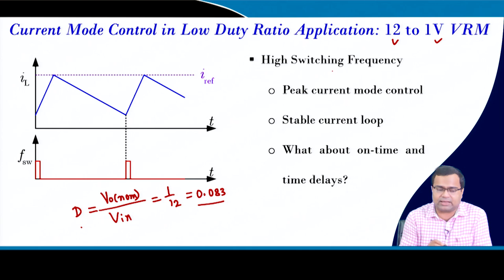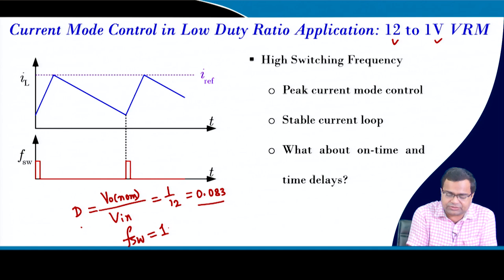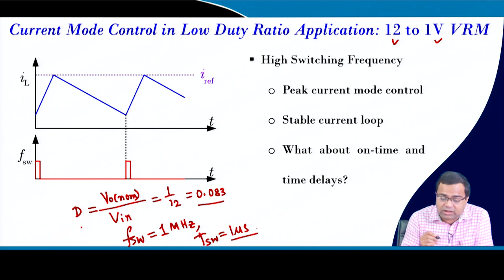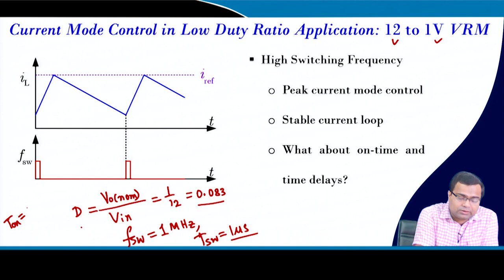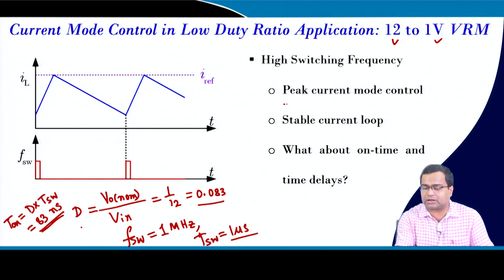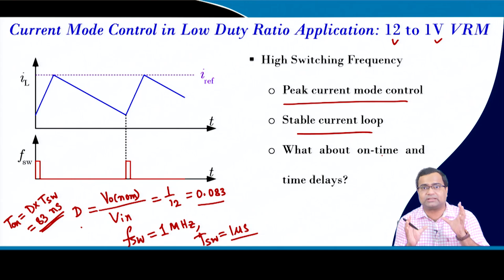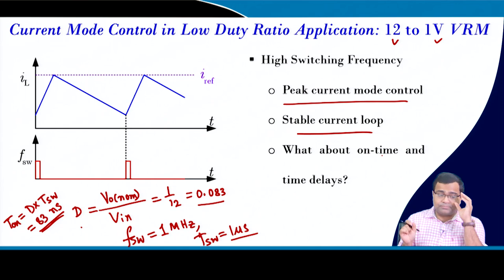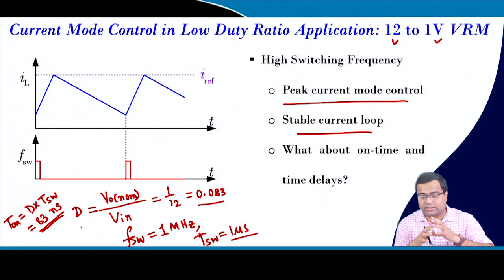At 1 MHz switching frequency with D=0.083, the on-time is roughly 83 nanoseconds. Imagine going to 10 MHz switching frequency - the on-time would be only 8.3 nanoseconds. Within this 83 nanosecond window for peak current mode control, we need to complete comparator comparison, error amplifier computation, and controller calculation to determine if the sequence of events can be completed.